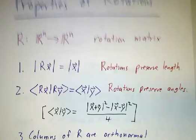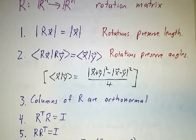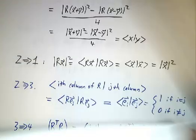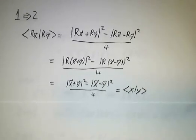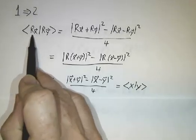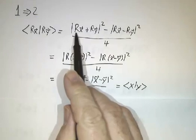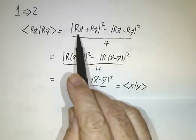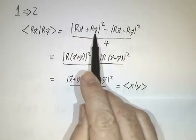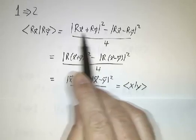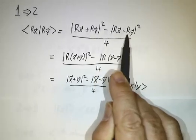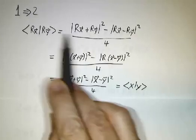Let's see why that works. First, we're going to show that if you preserve length, you preserve angle and inner product. To see that, we use what's called a polarization identity. You can get the inner product between two vectors from lengths, because it's the length of their sum squared minus the length of their difference squared, all divided by 4. If you expand this out, you get the length of rx squared plus the length of ry squared plus twice the dot product, then subtract that squared plus that squared minus twice the dot product, giving 4 times the dot product, divide by 4, and you get the inner product.